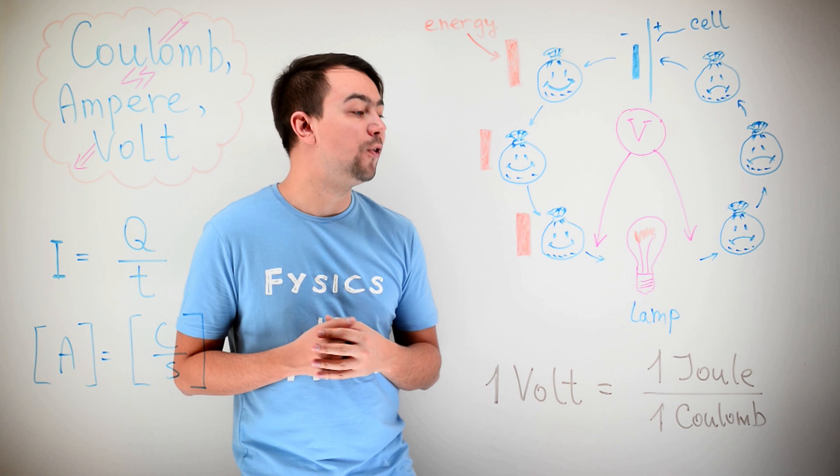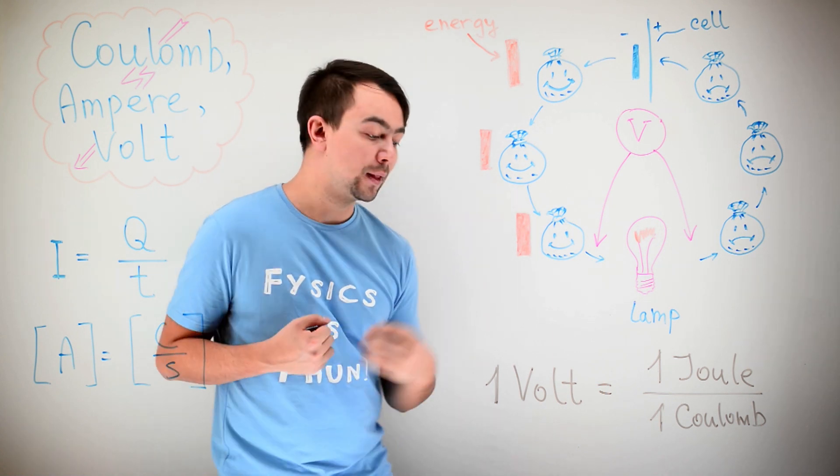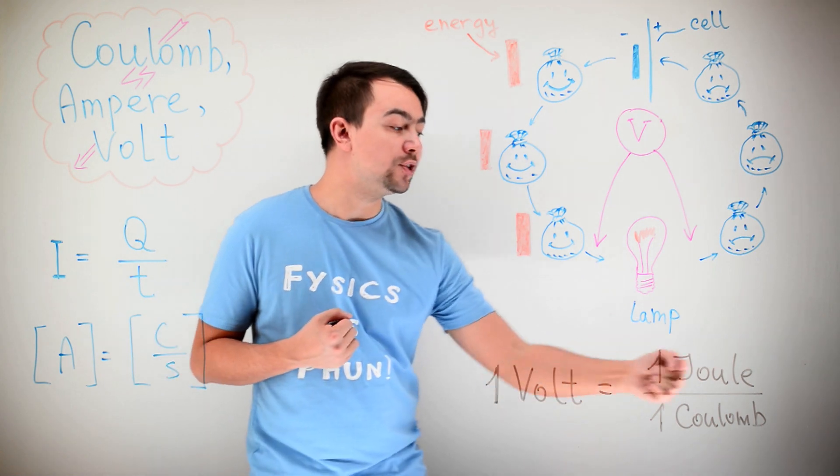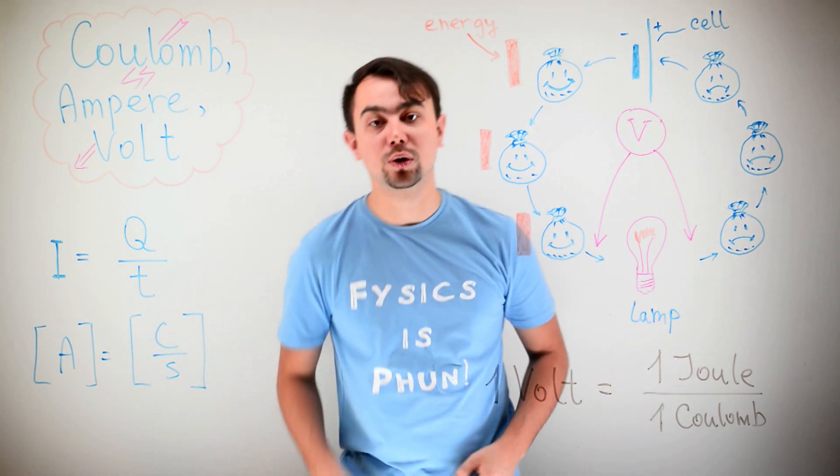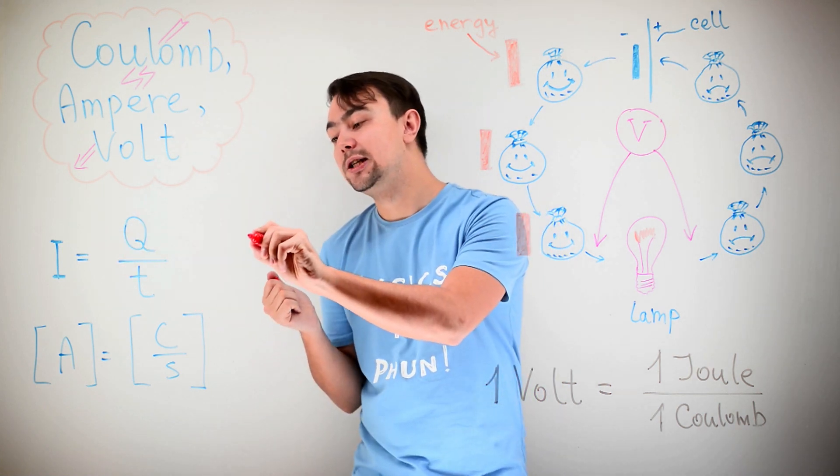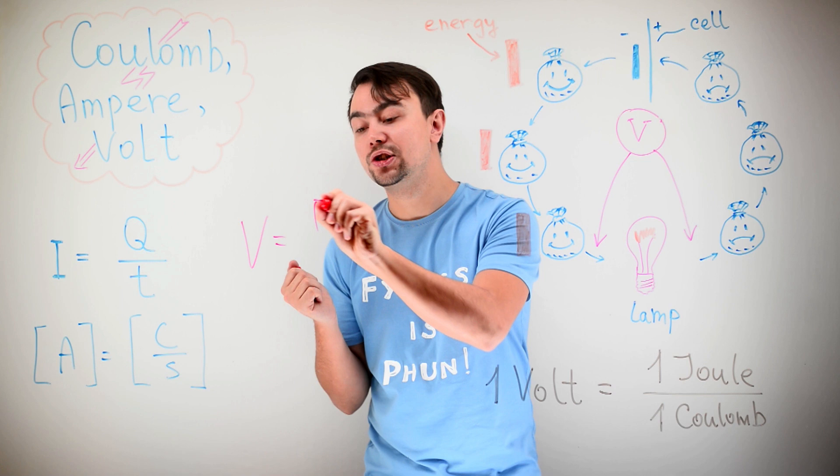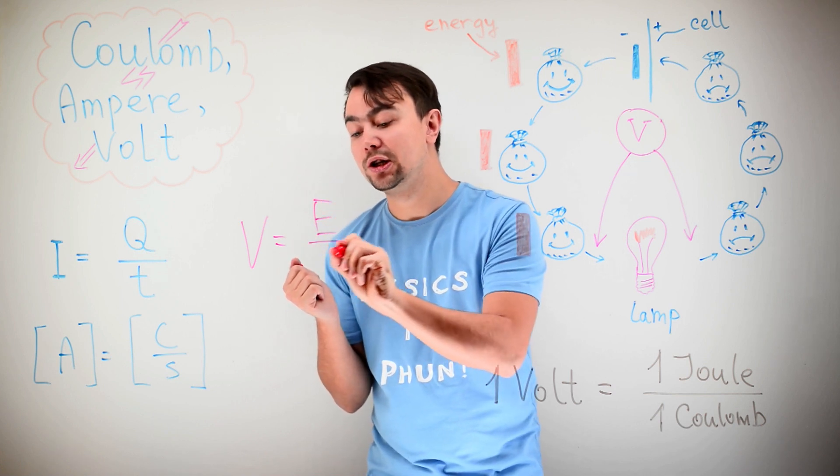So, it's the amount of energy per Coulomb. So, one volt is one joule divided by one Coulomb. And, of course, we can write a formula similar to that. It would look like this. Voltage is equal to energy divided by charge.